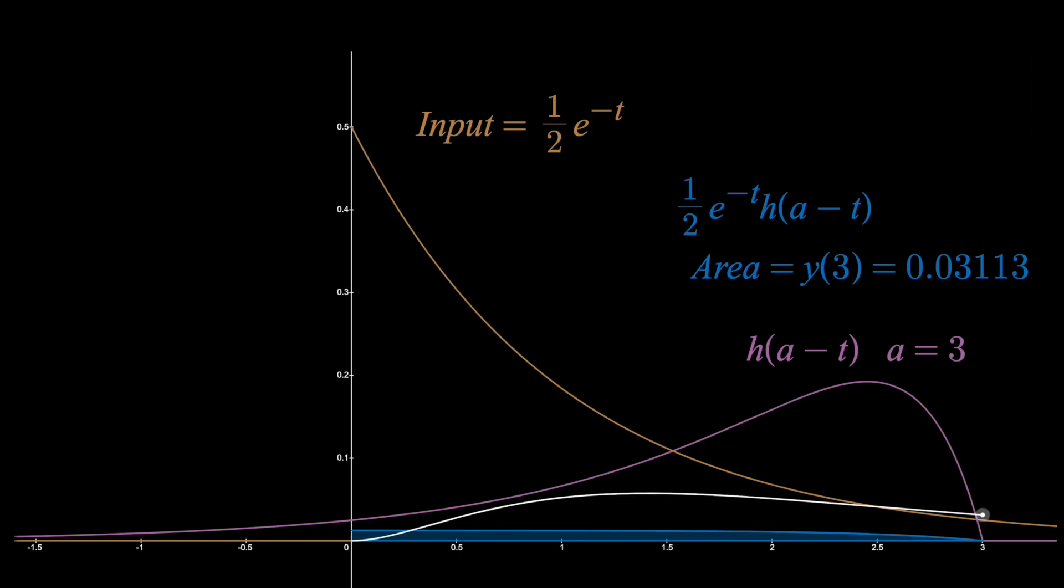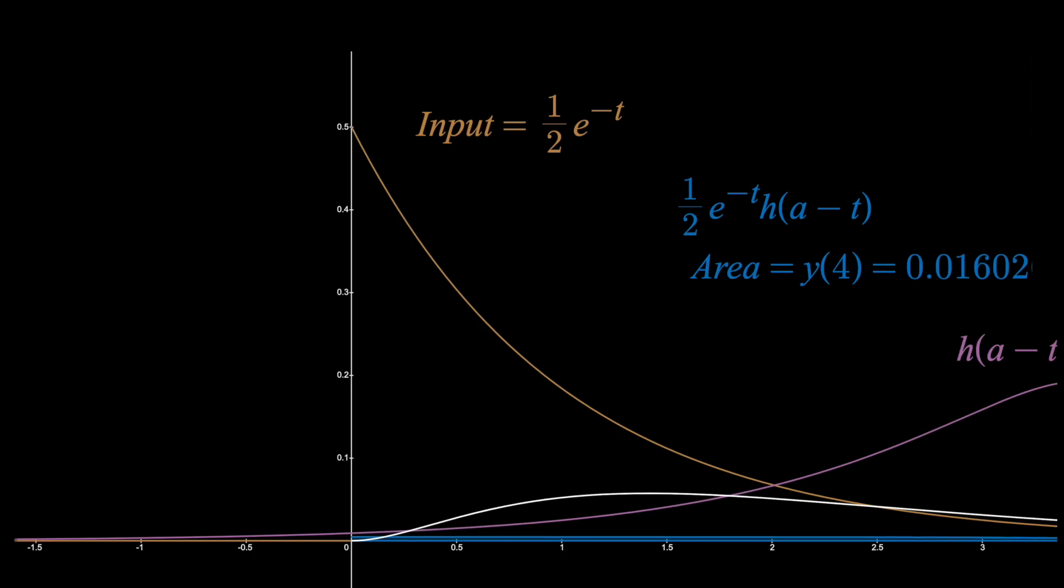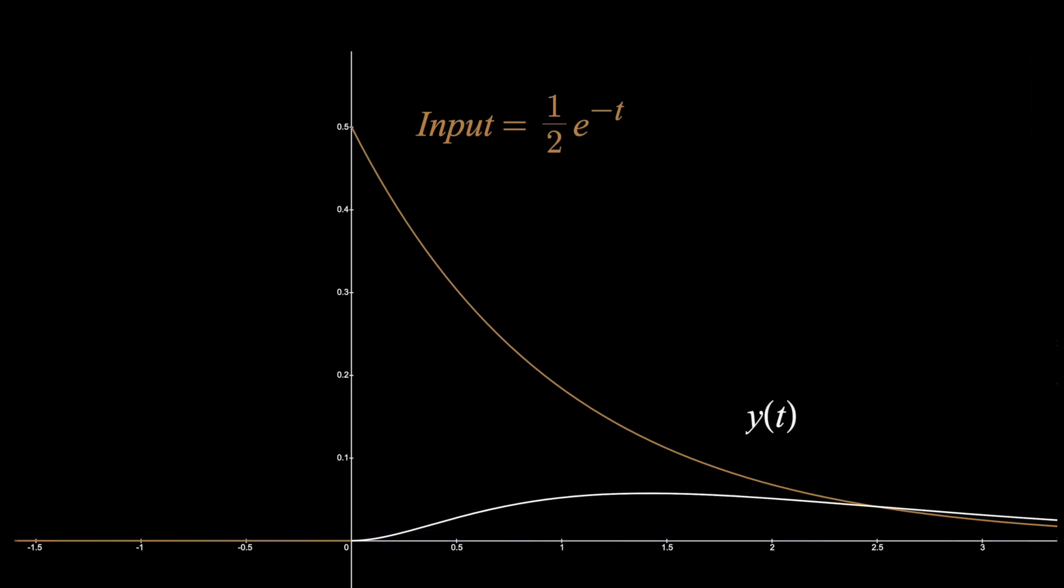Jeez, there's a lot of graphs here. Like this y value at t equals three for the curve in white is 0.03113, the area under the blue curve for this current shift. If we keep plotting those outputs, those areas for all values of A, we get an entire curve, which is the output. This is what our system does when it's given an input.